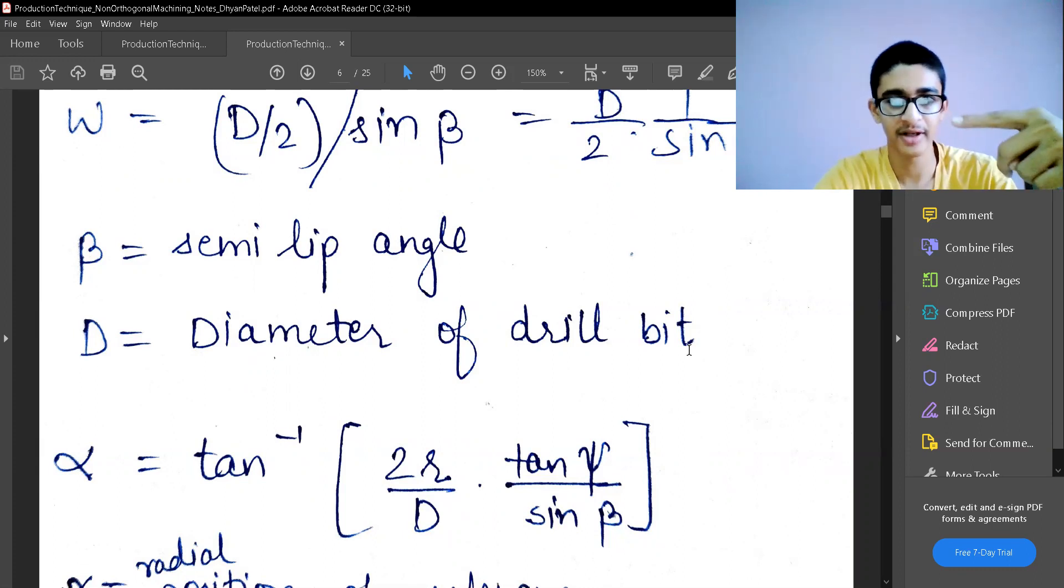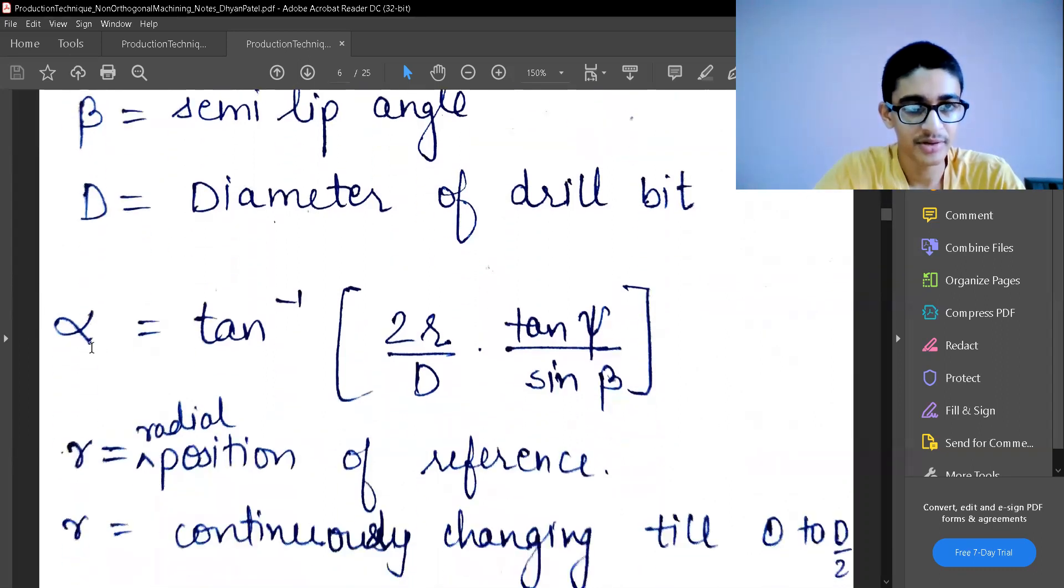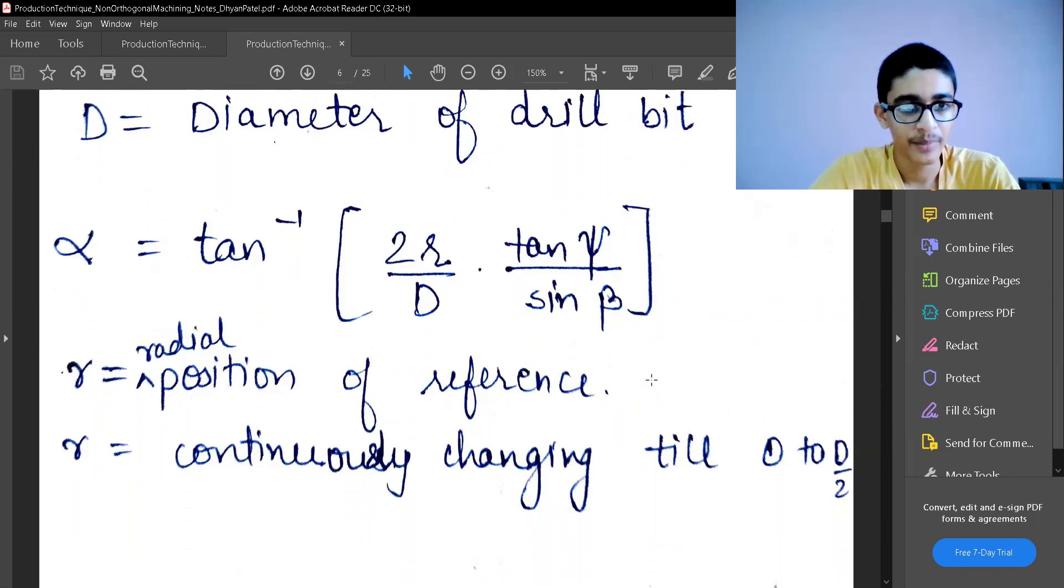If the drill machine is starting from here, in the front the part which you add which has different diameter, different shapes, that is the drill bit. And we are defining alpha, that is the equivalent alpha angle, that is tan inverse of 2r by D into tan psi by sine beta. These are also coming from empirical relations and you need not remember or prove this. r is the radial position of the reference, so this is an important part.